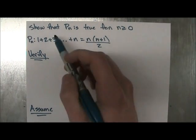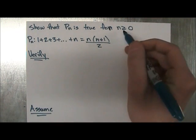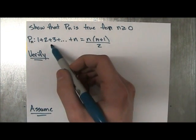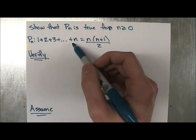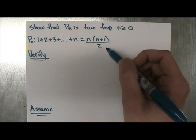And it says, show that Pn is true for n greater or equal to zero. And Pn is 1 plus 2 plus 3 plus dot dot dot plus n equals n times n plus 1 divided by 2.